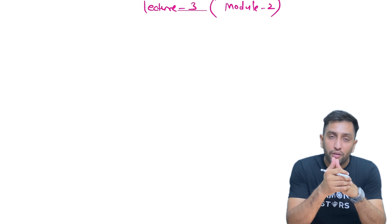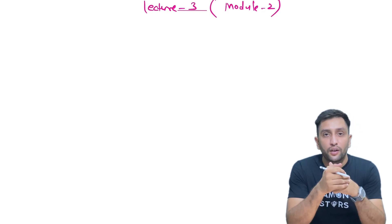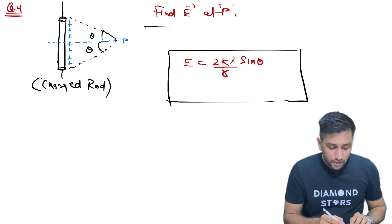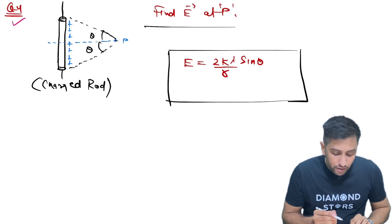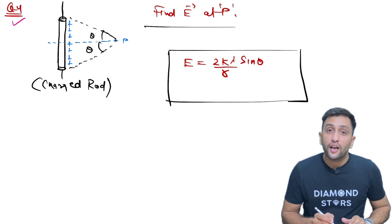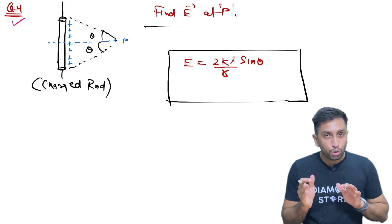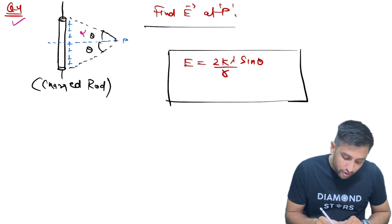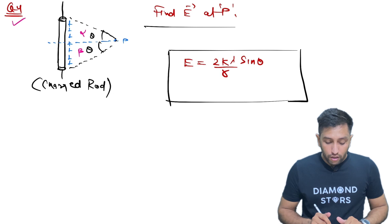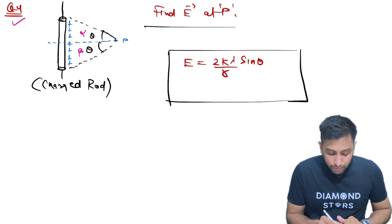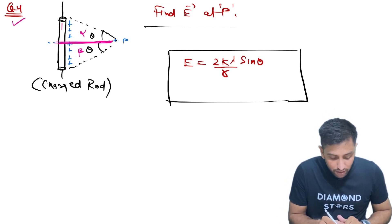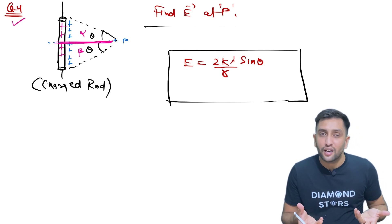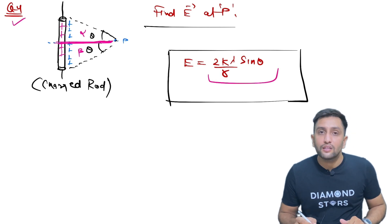The formula 2k lambda by r sin(alpha/2) is a general formula. Now some few questions are there. I have already discussed this type in the case of the line charge where I have taken alpha equals to beta in the last video. In that case, this is a perpendicular bisector and the formula becomes 2k lambda by r sin(theta).